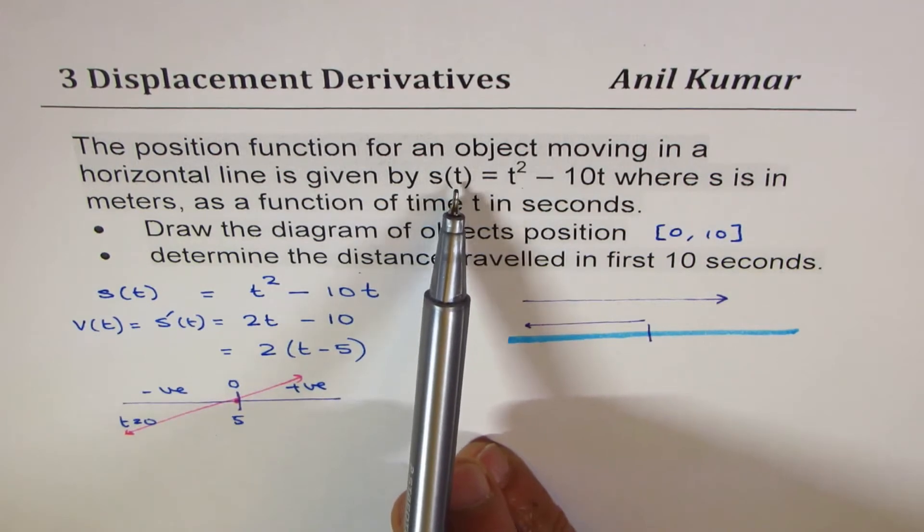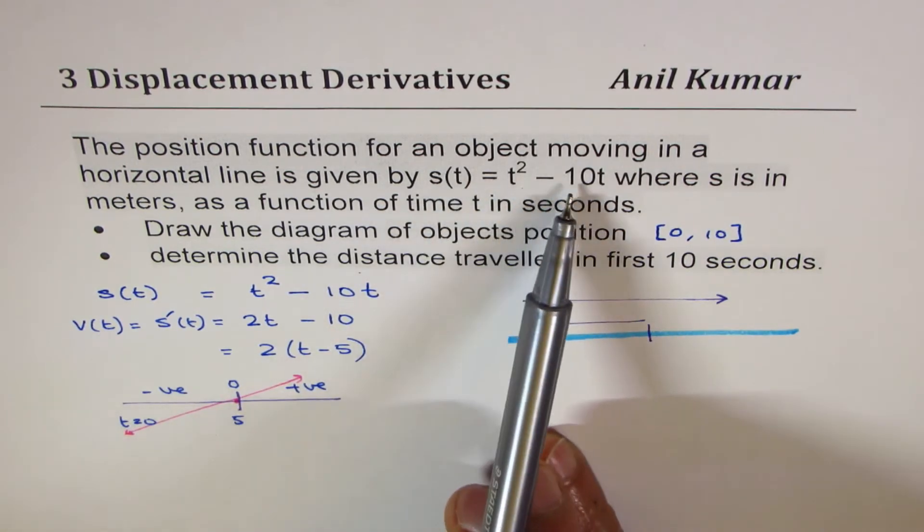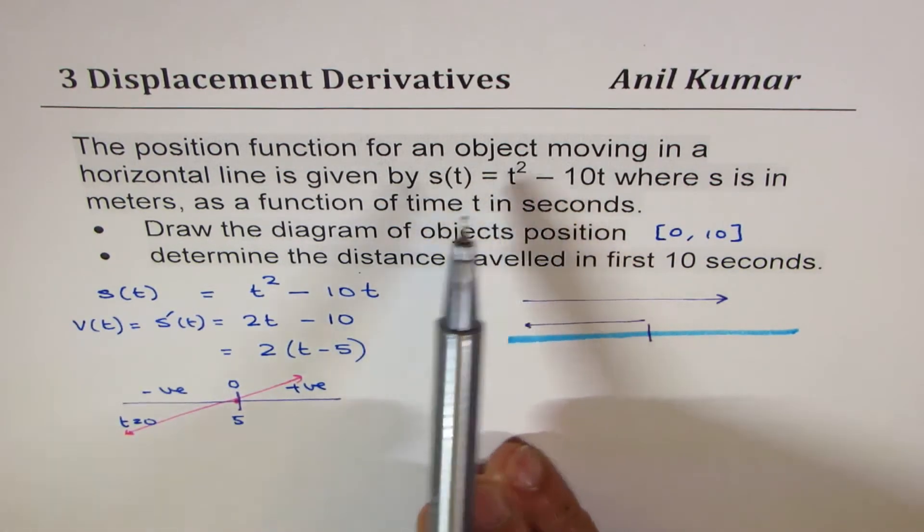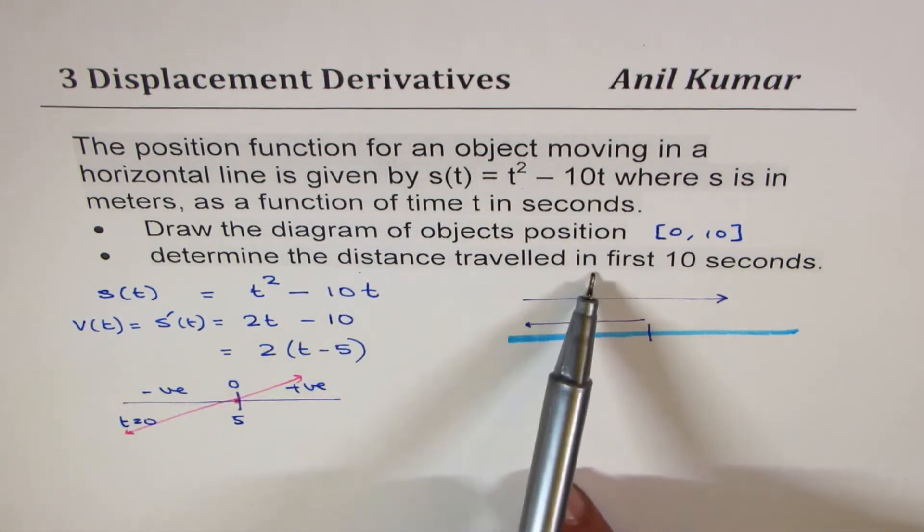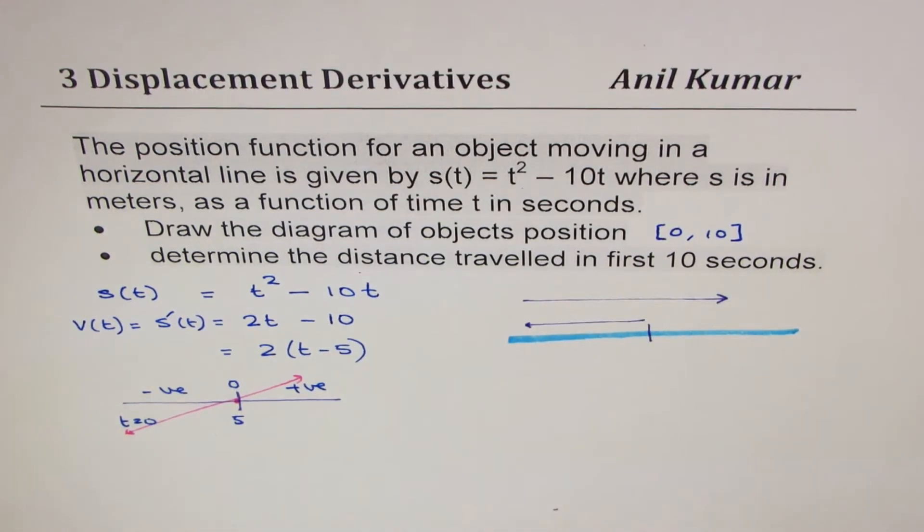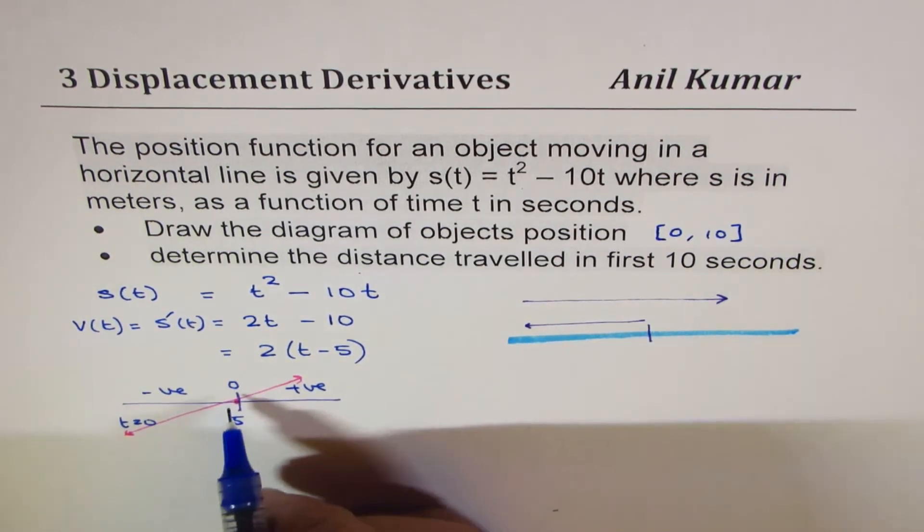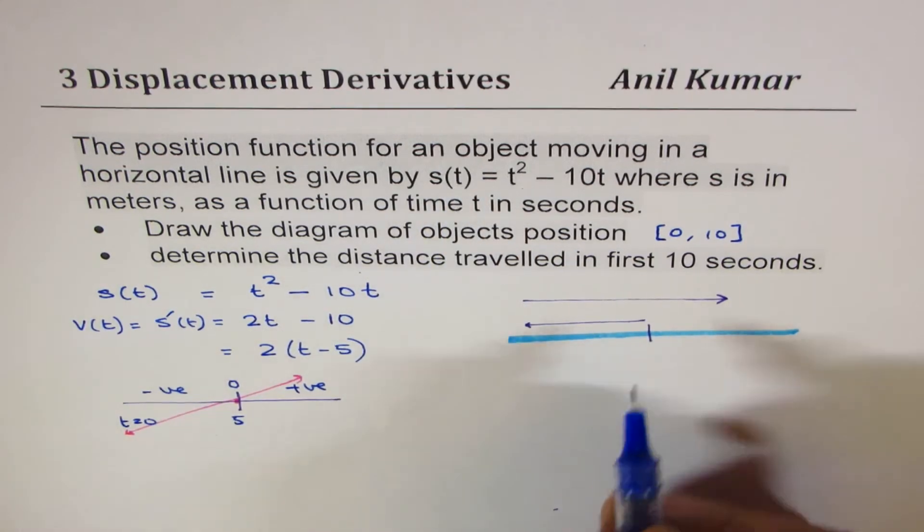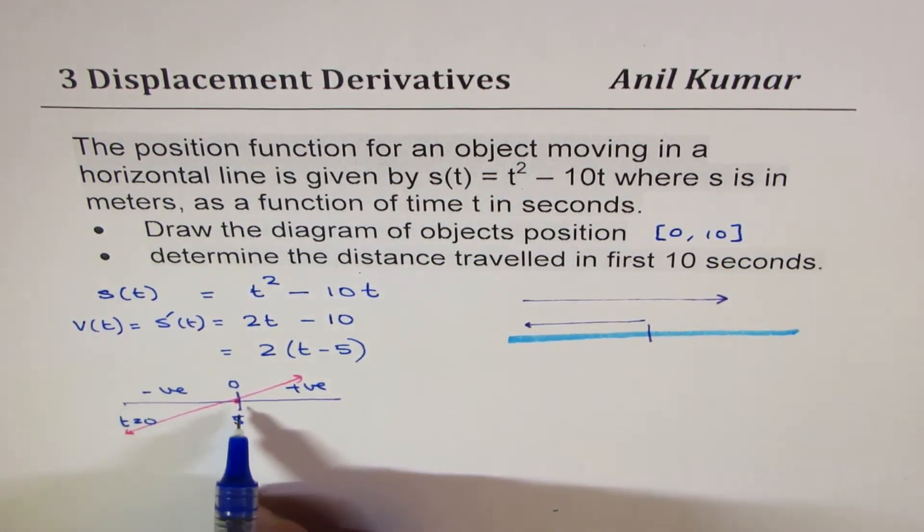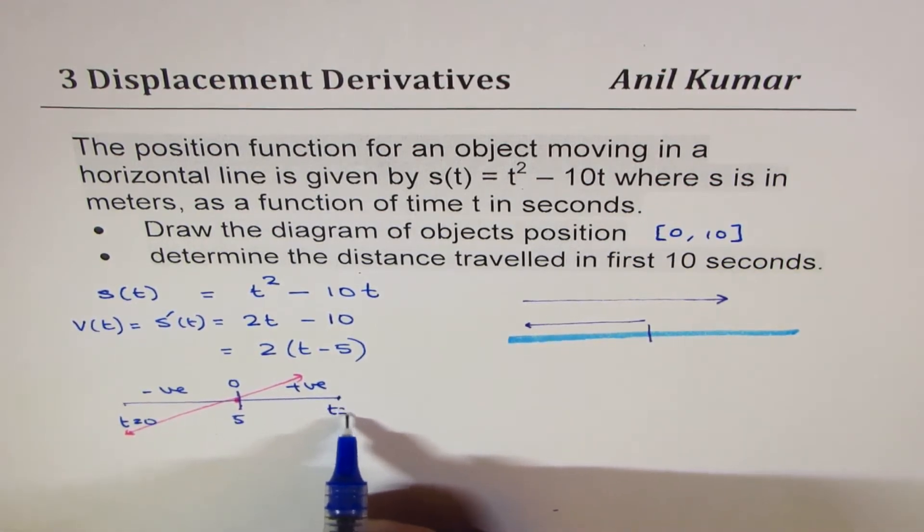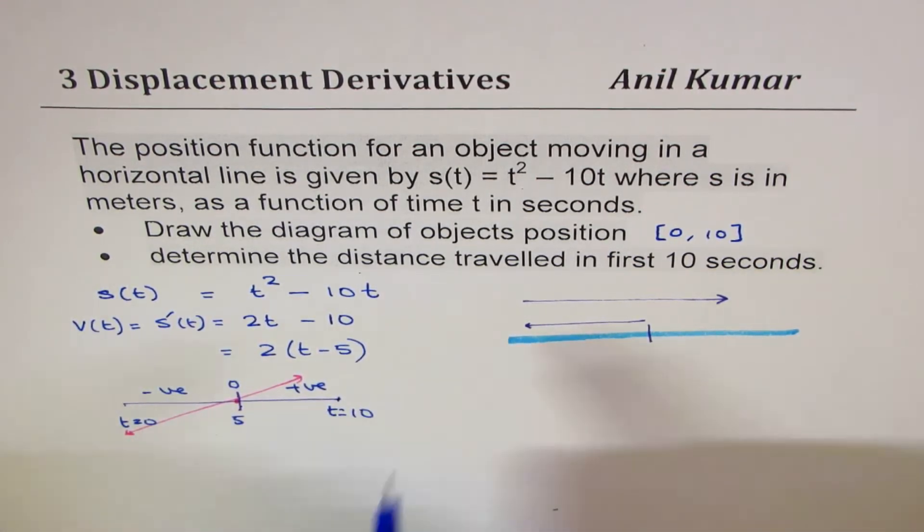So do not just substitute 10 here and find a value that may give you displacement at t equals 10, but not the distance traveled in first 10 seconds. So that's a word of caution. So what we really need to do here is: at t equals 0, we should find the displacement. So we'll find displacement at t equals 0, at t equals 5, and also at t equals 10. And then from there, we can calculate the total distance covered.